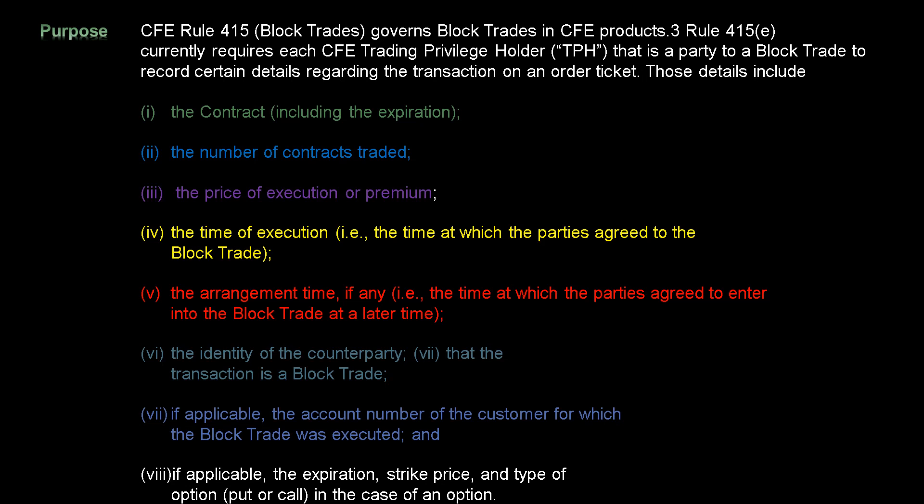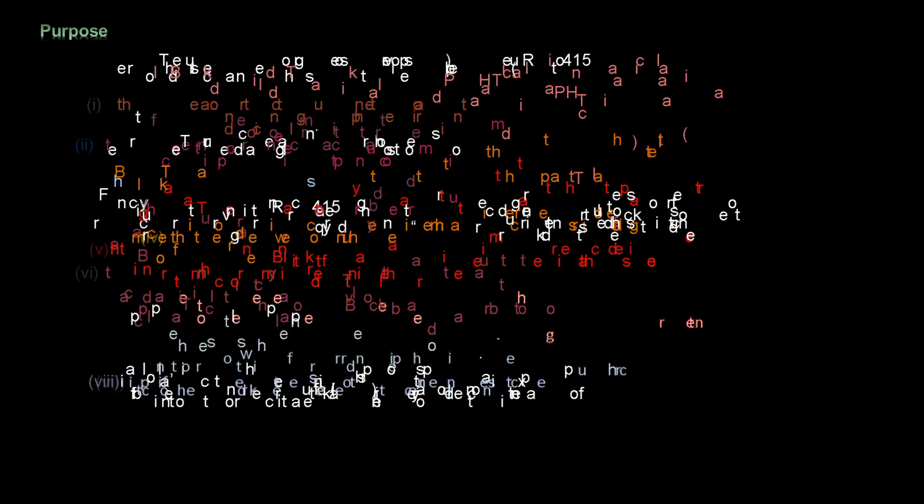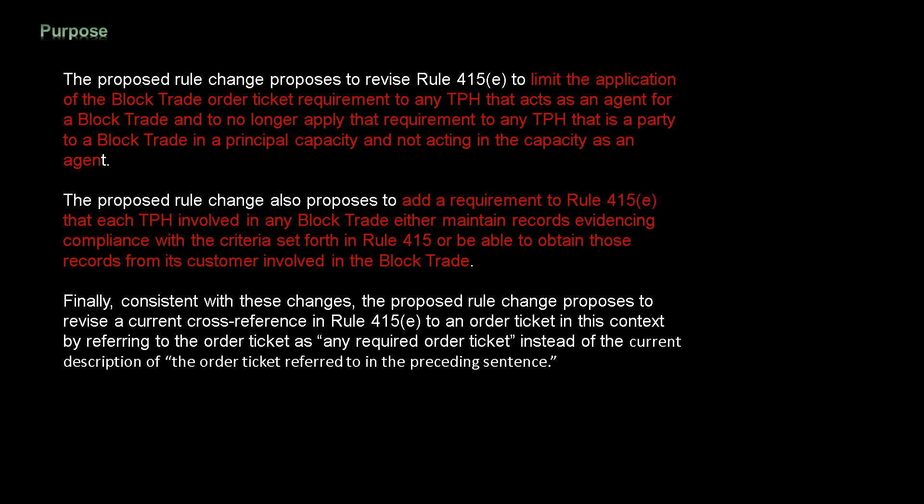Number seven, that the transaction is a block trade; number eight, if applicable, the account number of the customer for which the block trade was executed; and nine, if applicable, the expiration, strike price, and type of option — whether put or call — in the case of an option. The proposed rule change proposes to revise Rule 415(e) to limit the application of the block trade order ticket requirement to any TPH that acts as an agent for a block trade.